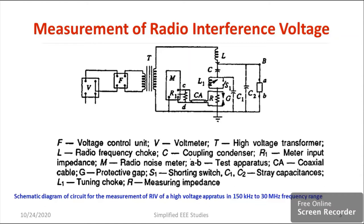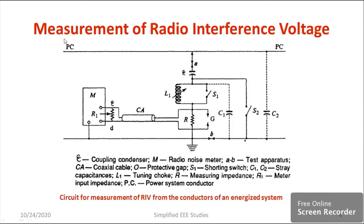Now I would like to discuss another type of circuit for the measurement of radio interference — especially for power system lines or power transmission lines. We have the power system conductor, PC, as the test object, placed vertically. The radio interference meter is placed there. R1 represents the meter impedance. C1 and C2 represent the stray capacitance or parasitic capacitance of the connecting leads. S2 is the shorting switch, and S1 is also a shorting switch related to the choke. The main purpose of the choke is coupling different stages, and it is connected with a coupling capacitor or coupling condenser. A protective gap is also included to ensure safety.